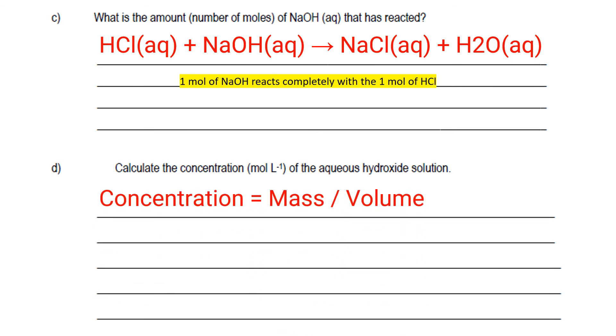Calculate the concentration in moles per liter of the aqueous sodium hydroxide. The formula for calculating concentration is moles over volume. You can calculate this by writing the moles of HCl times it by 1 over 25 ml because initially we took 25 ml of the volume and then times it by 1000 ml over 1 L to get the concentration in moles per liter.